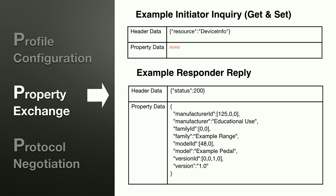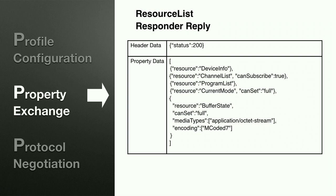You could ask a device for a JSON schema of its properties and even generate a GUI to edit it using property exchange without building a custom editor. A message transaction starts with an inquiry — the header says 'resource: device info,' and the device replies with a status header and actual data. This is a simple example: you tell the device what you're asking for, and it sends back the payload.